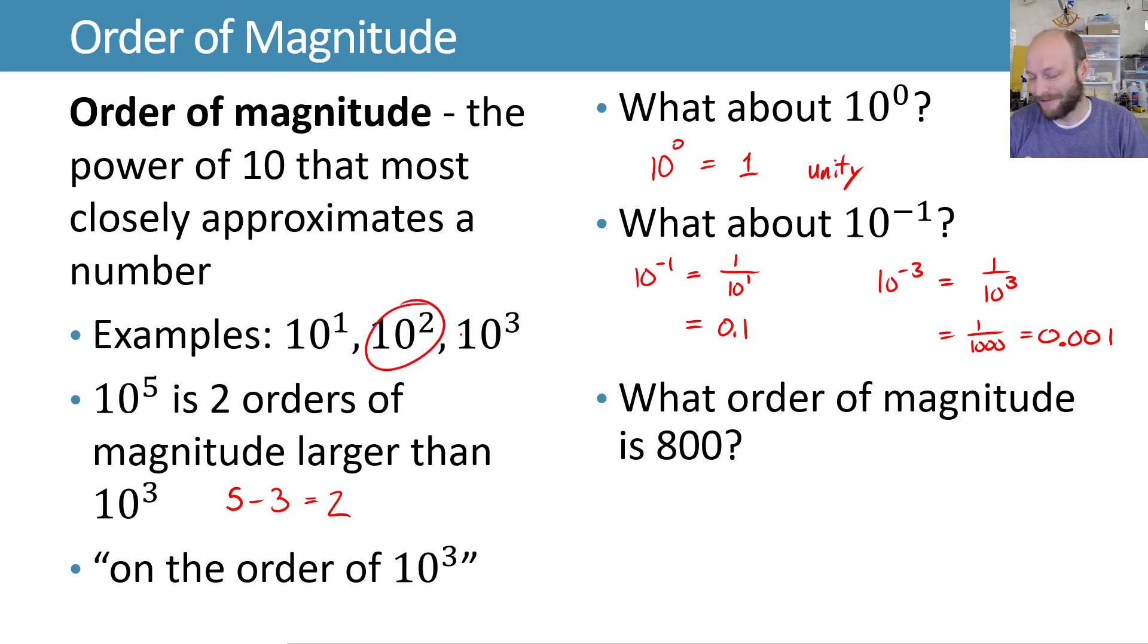100 to 1,000, halfway in between would be 550. But is that closer to 100 or is it closer to 1,000? Well, we have a tool for dealing with things that span large ranges like this, and that's a logarithm.